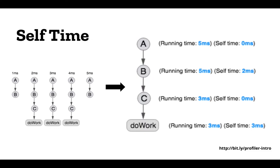We can change that if we take these five samples and only 'do work' in three of them — at positions two, three, and four. Now there are three samples of 'do work' and two samples of B. Looking at the call tree, you can see B now has a self time of two milliseconds and 'do work' has a self time of three milliseconds.